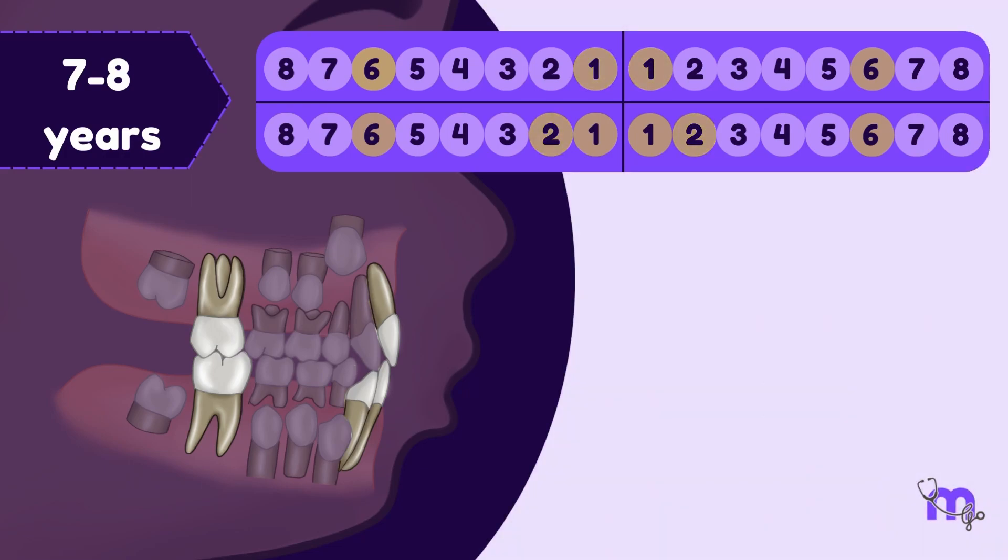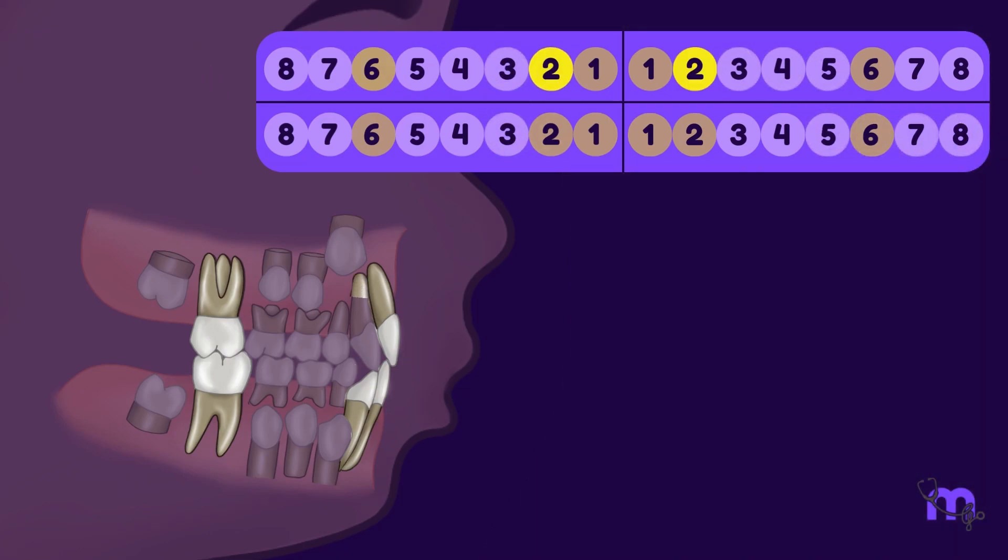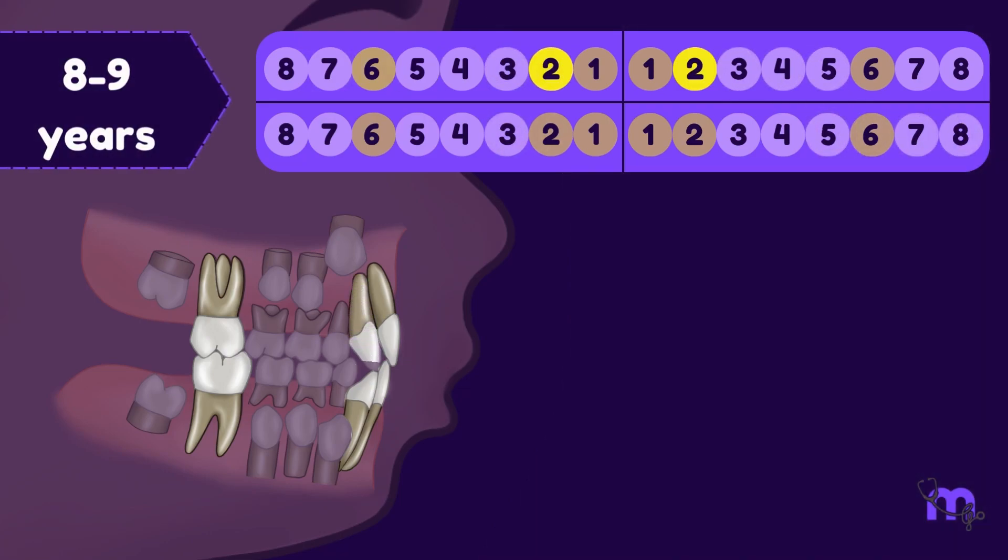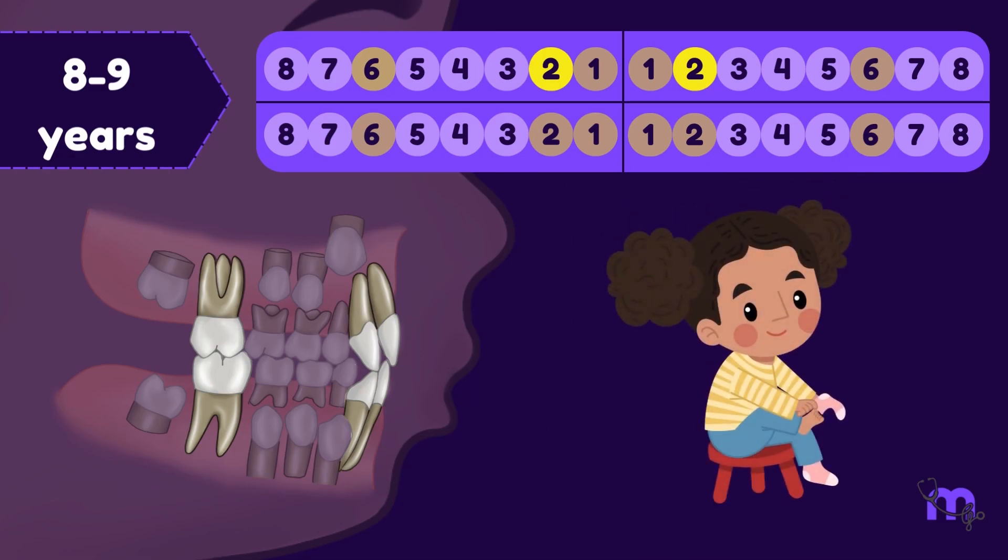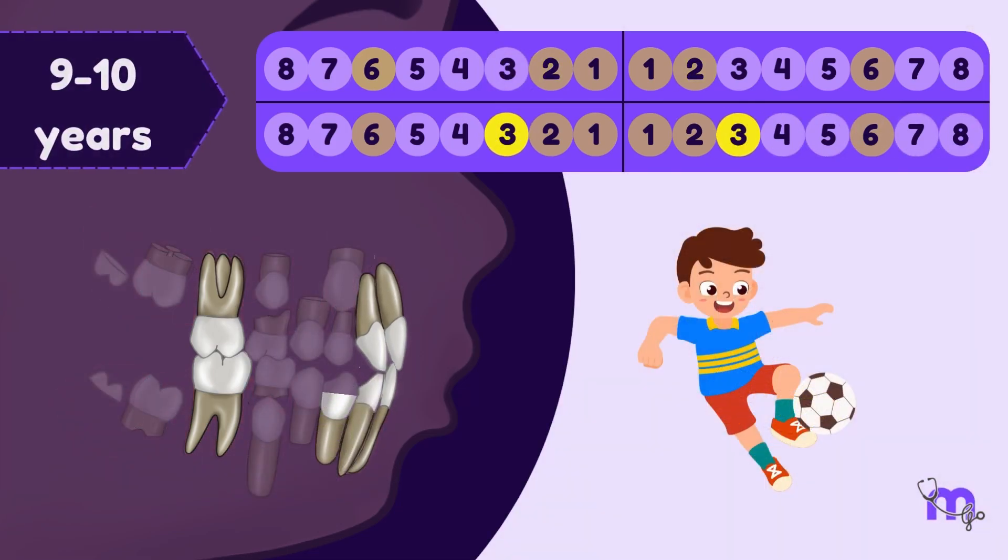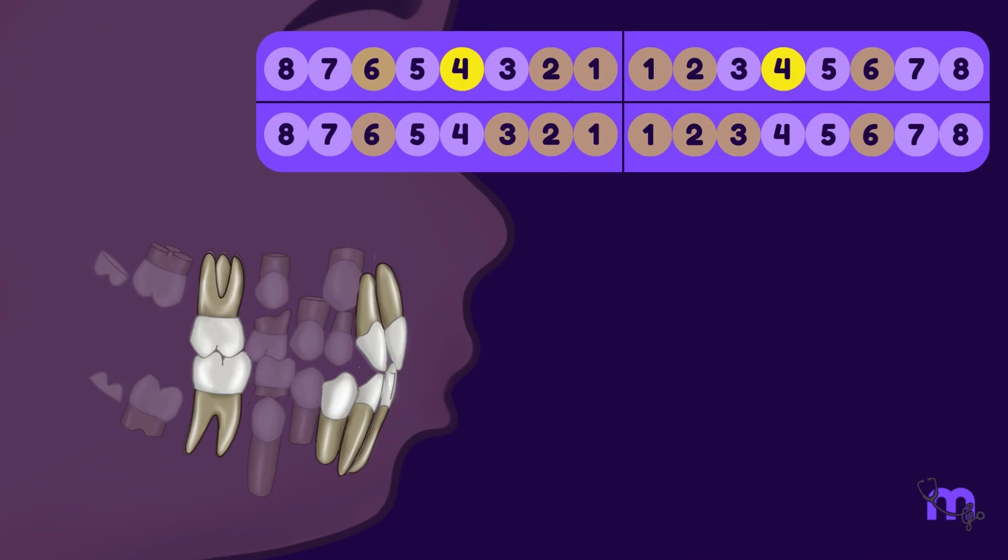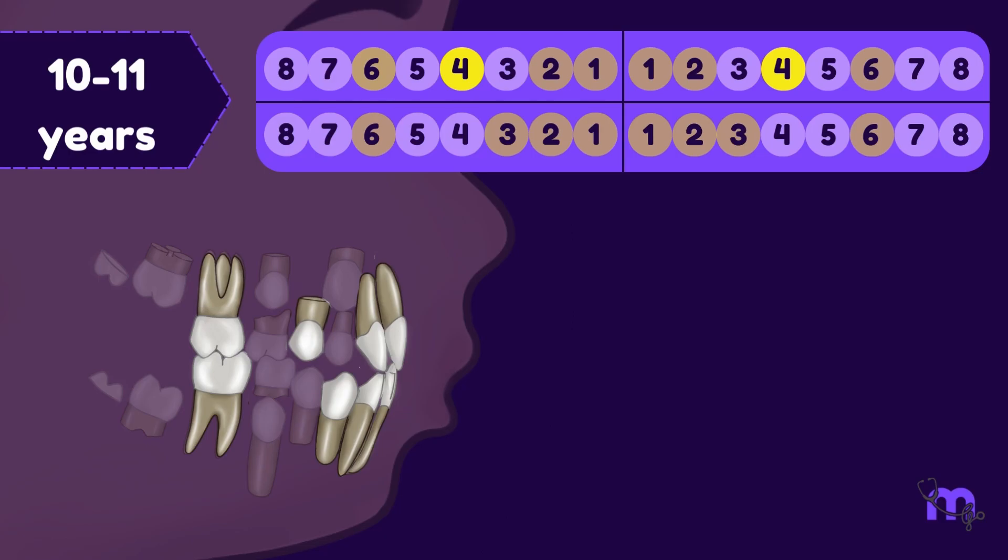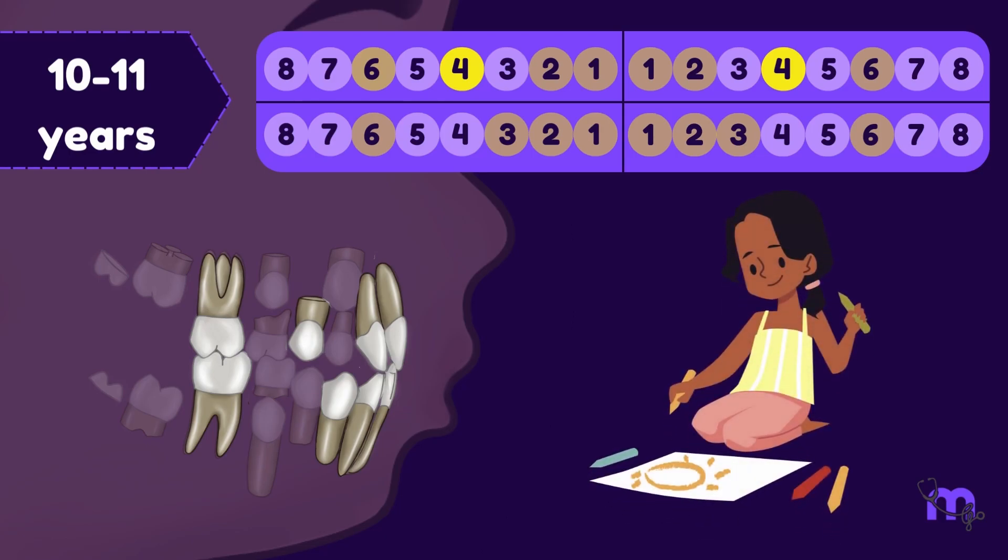As time progresses, individuality asserts itself in the child, and at the same time, certain teeth make solitary entrances. The maxillary lateral incisors erupt at 8-9 years, just like the child's growing independence. Next, we have the mandibular canines at 9-10 years, symbolizing developing strength and determination. Then comes the maxillary first premolar, erupting at about 10-11 years, reflecting the development of unique characteristics.